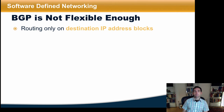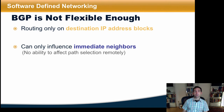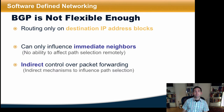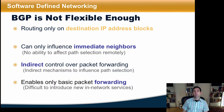First of all, it's generally only possible to route on destination IP address blocks. It's only possible to influence immediate neighboring autonomous systems, as opposed to traffic forwarding in remote domains. It's generally only possible to exert indirect control over how switches and routers forward traffic through mechanisms like AS path prepending, local preference, and so forth. And it's rather difficult to introduce new network services, such as the ability to arbitrarily route traffic flows through middle boxes.